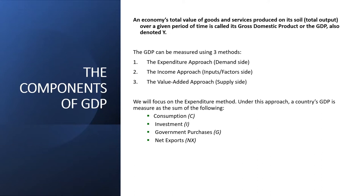What we are going to do for our purpose is to focus on the expenditure approach in this module. Under the expenditure approach, we take all the key agents and players in the economy. Households are one type of economic agent, firms are another, government is another, and the external sector — the foreign sector — is another. When we take all of those together and look at the level of spending each has engaged in, for example, households engage in consumption.